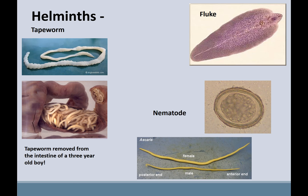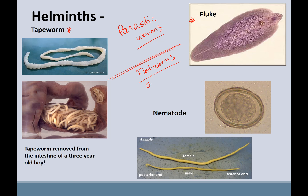Our last section is on helminths and arthropods. Helminths are parasitic worms, something most of us have probably not encountered. There are three main groups: the tapeworms, the flukes — and together those two are called flatworms — and the third class is the nematodes, or roundworms.